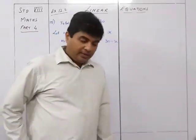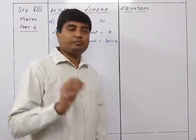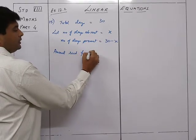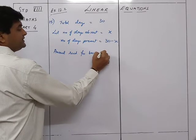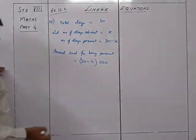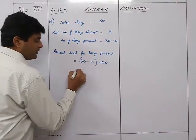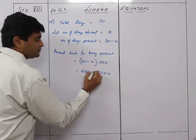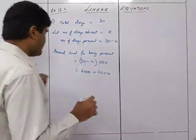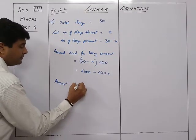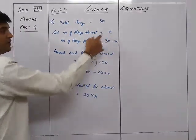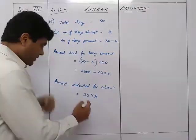Amount received for being present = (30 minus x) into 200 = 6000 minus 200x. Amount deducted for being absent = 20 into x = 20x.